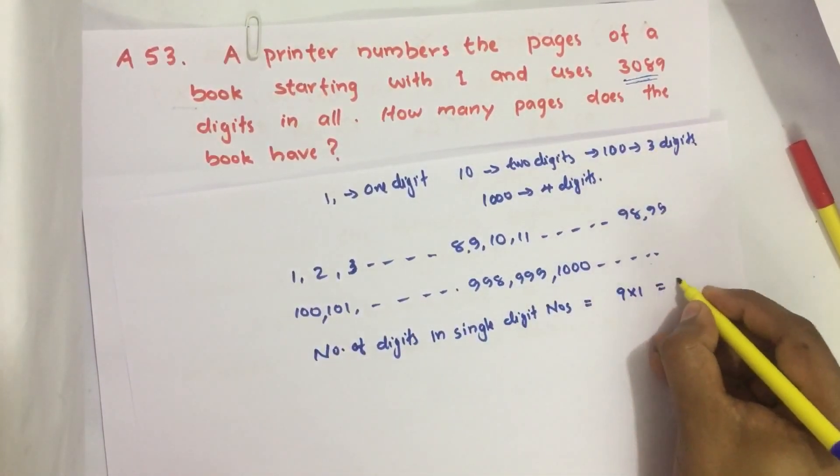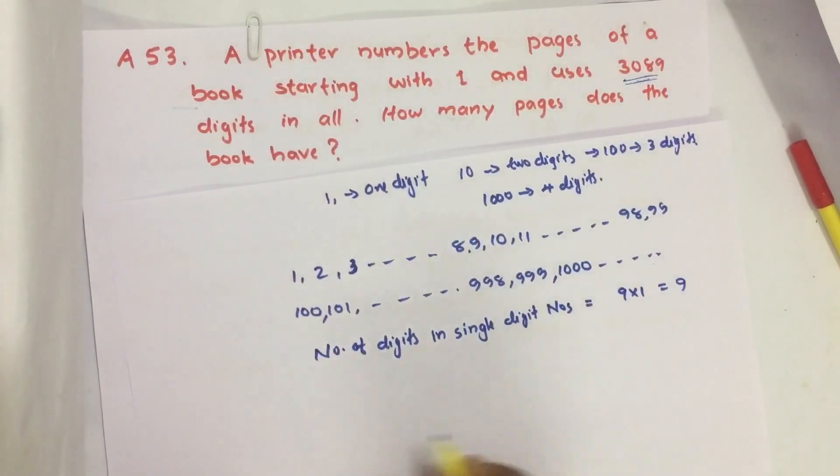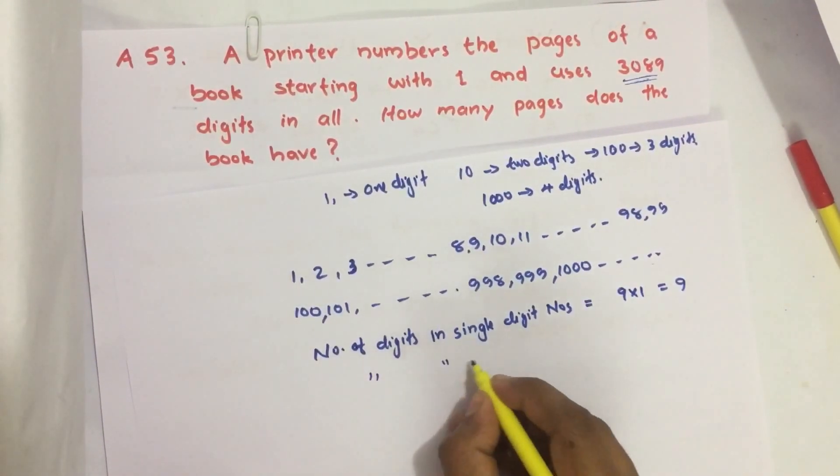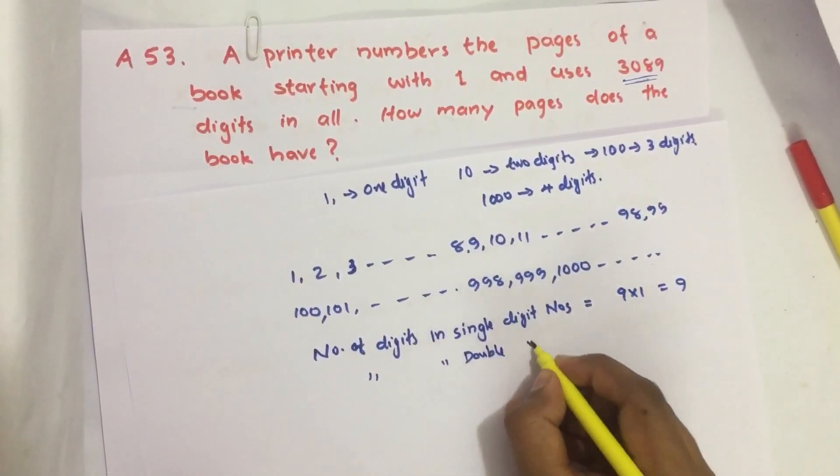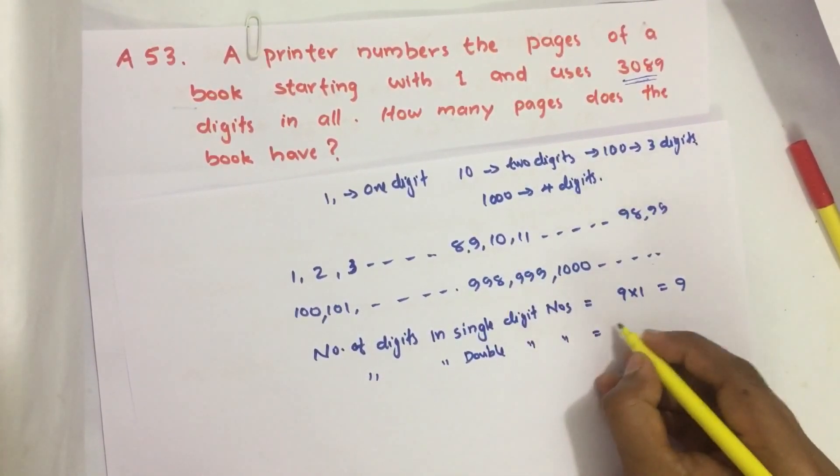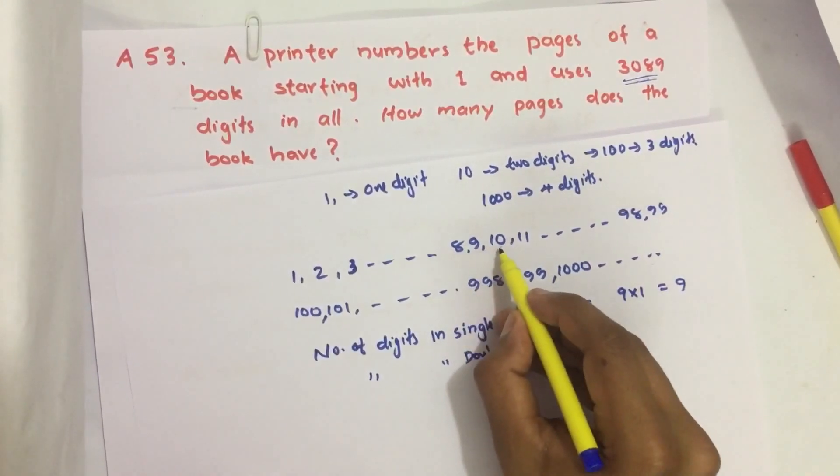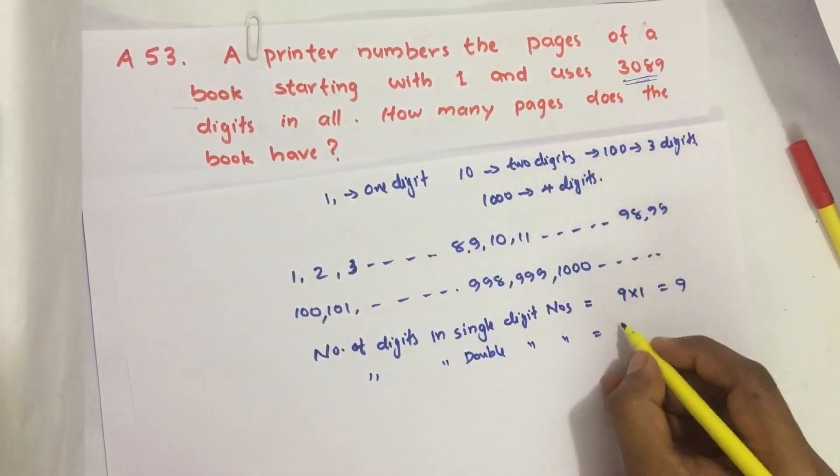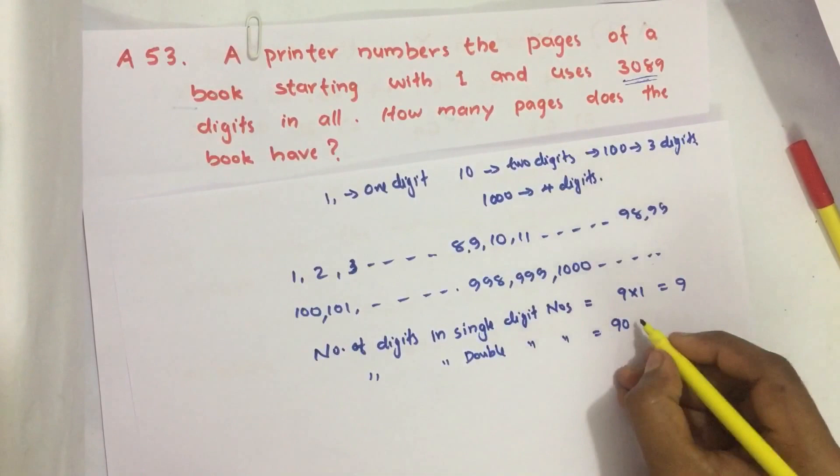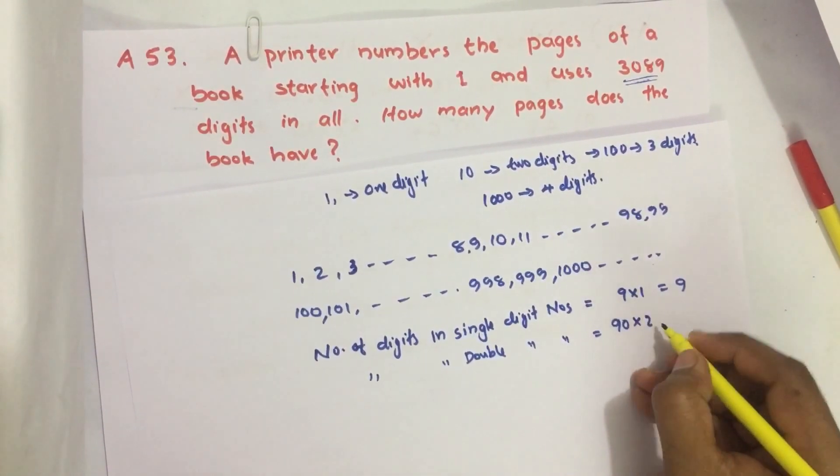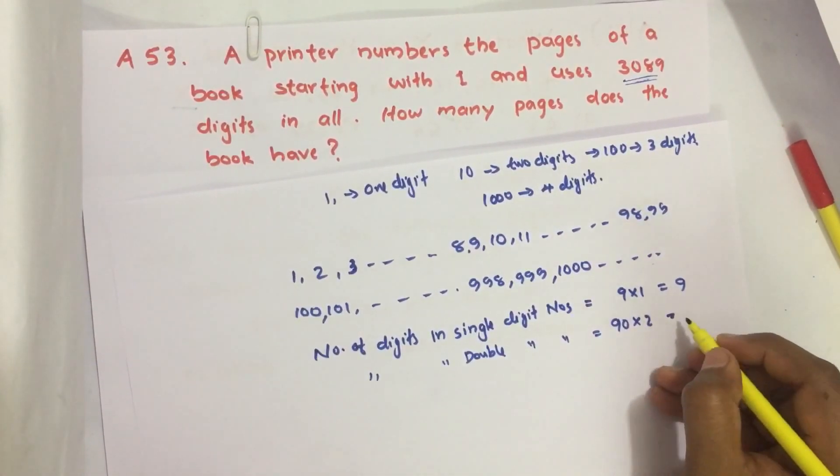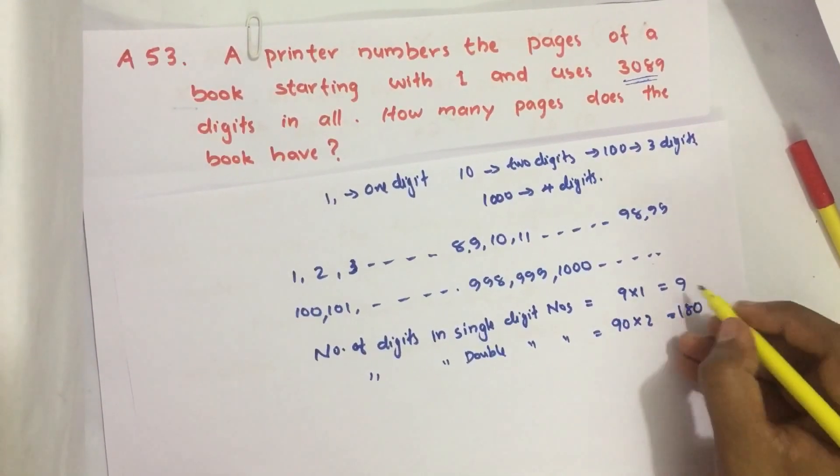Similarly, for double digit numbers from 10 to 99, there are 90 such numbers, and two digits are used to write each number, so the total is 180 digits.